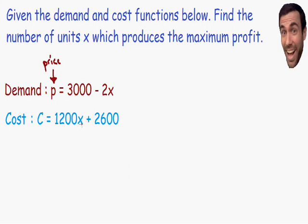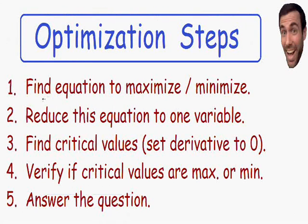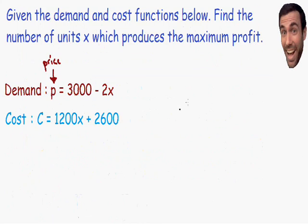Now let's take a look at all of the steps we need to use to perform an optimization problem. Step number one says to find the equation to maximize or minimize. Going back to our example, we need to find the equation to maximize or minimize. The question says find the number of units x which produces the maximum profit, so this profit is what we need to maximize.